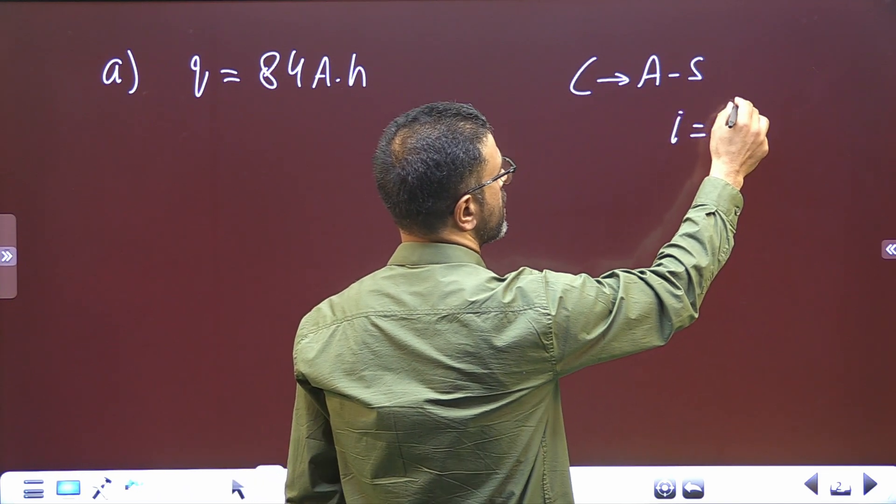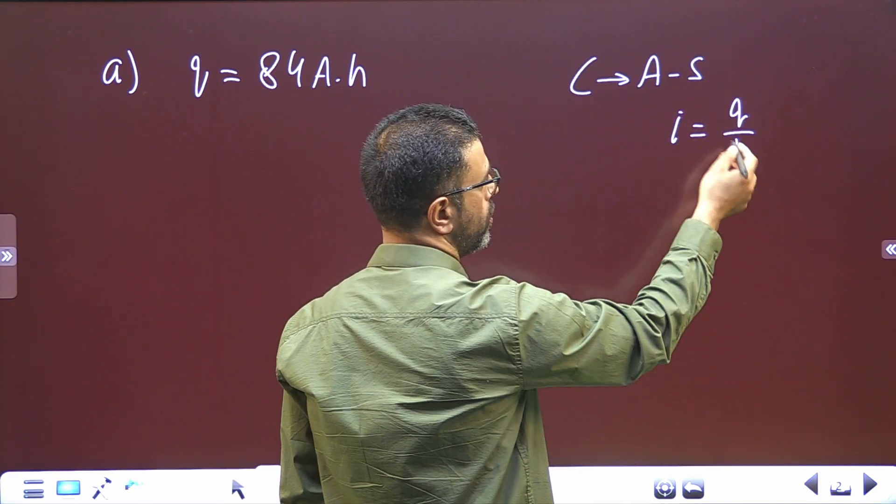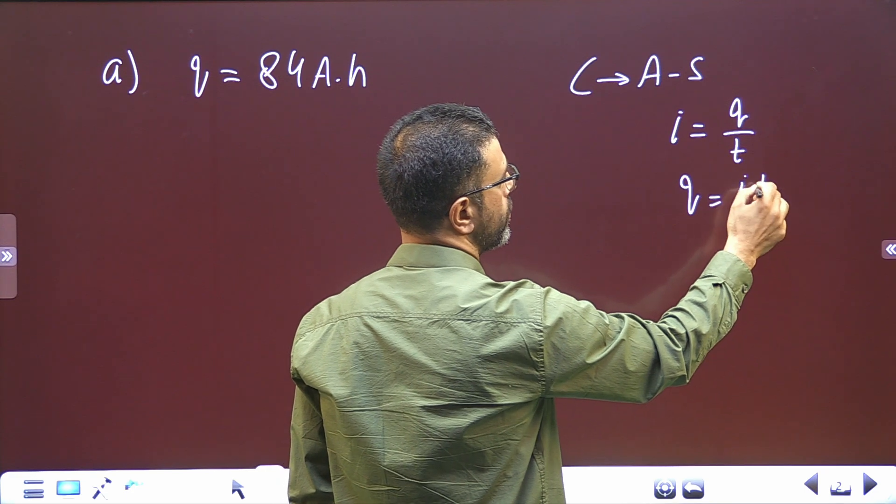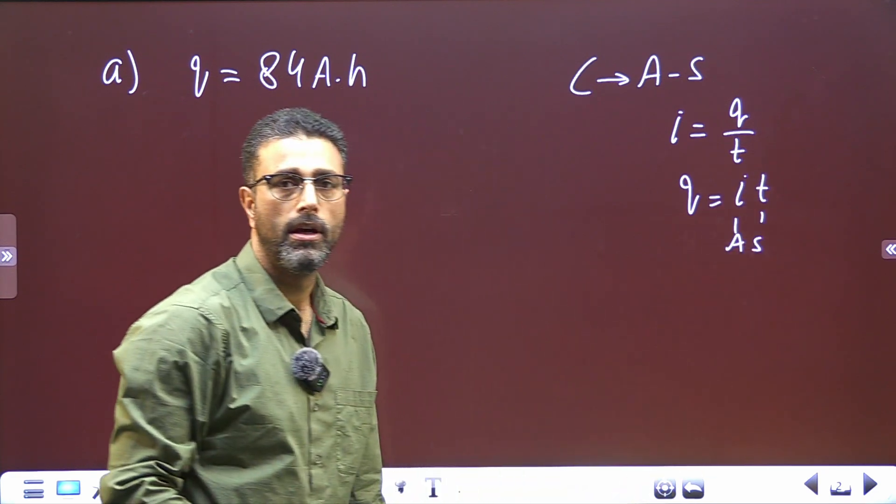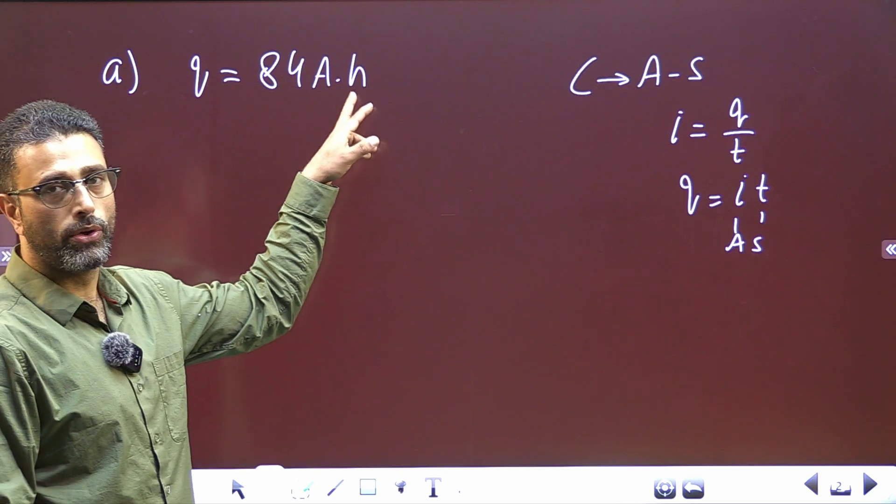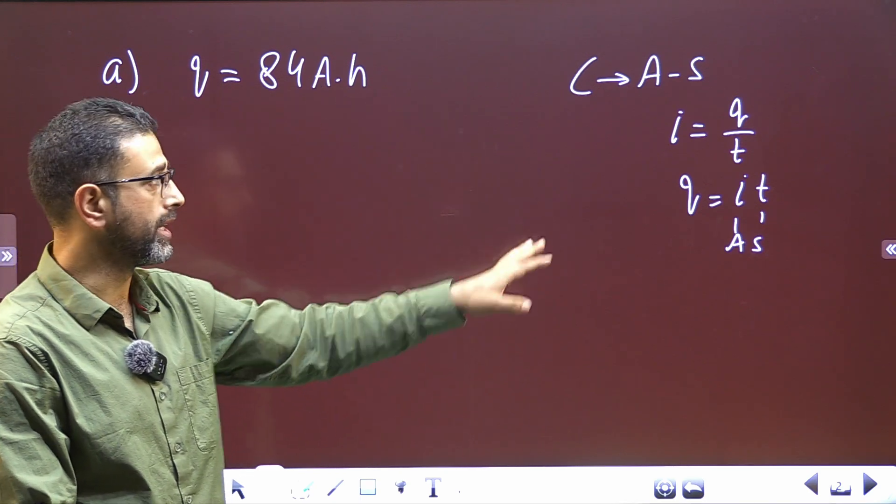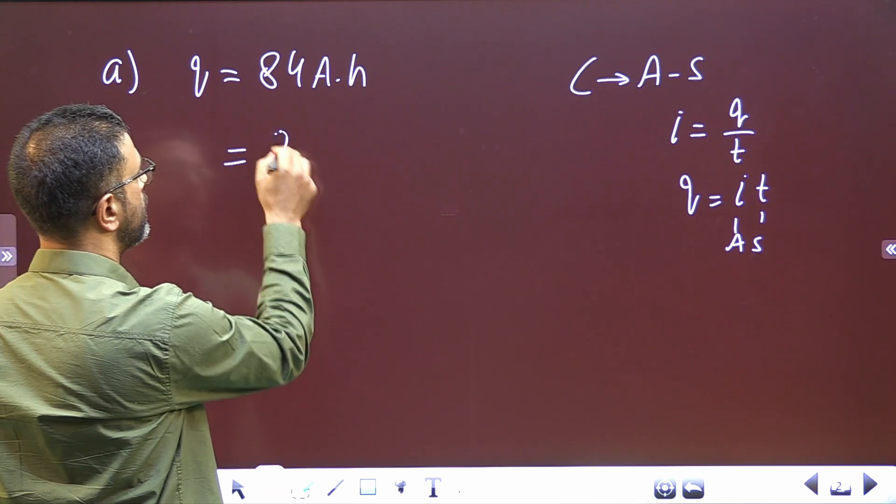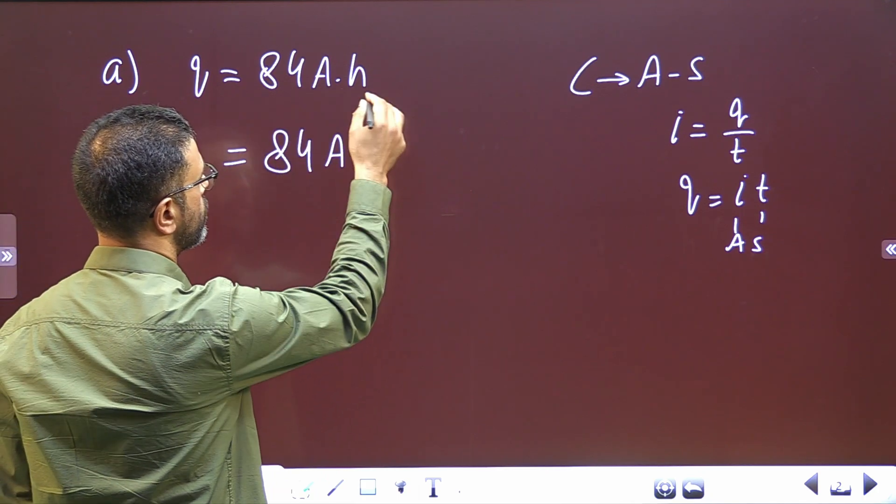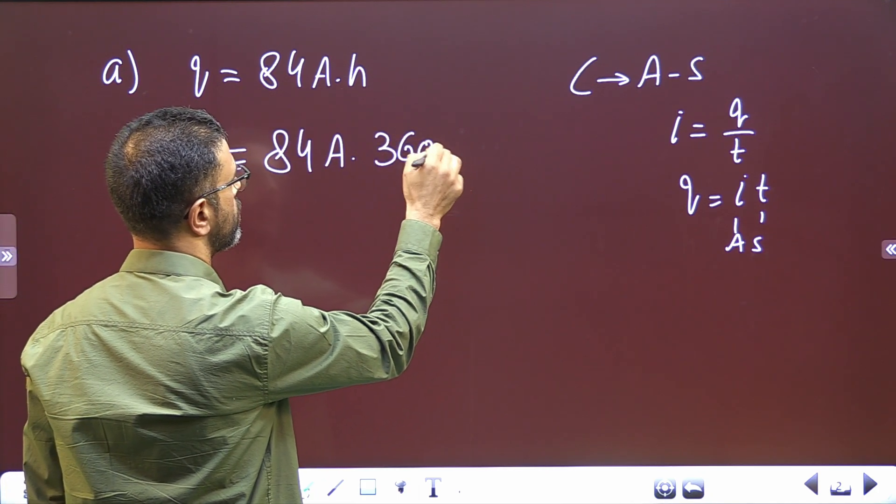So charge equals I times t, ampere times second. Now we are given ampere-hours, so all we have to do is convert hours to seconds. That's very simple: 84 ampere-hours—one hour is 3600 seconds.